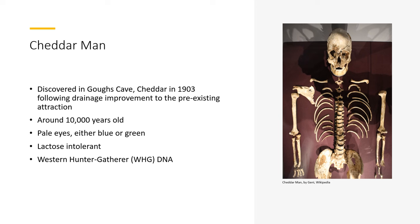Later analysis discovered that Cheddar Man was around 10,000 years old — an early Mesolithic human. Genetic analysis showed that he had pale eyes, either blue or green, was lactose intolerant, which fits the wider population of the time, and he contains Western Hunter-Gatherer DNA, or WHG. Western Hunter-Gatherer DNA stems from around 125,000 years ago from an as-yet undetermined origin, but academics reckon it stems from either Southeast Europe or the Near East, showing an influx of people from the East into the West many thousands of years ago.